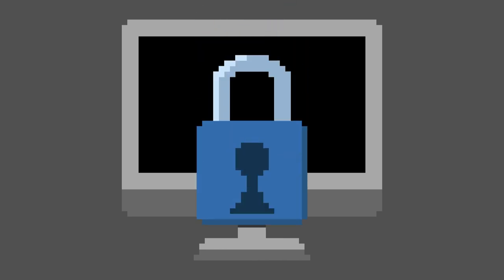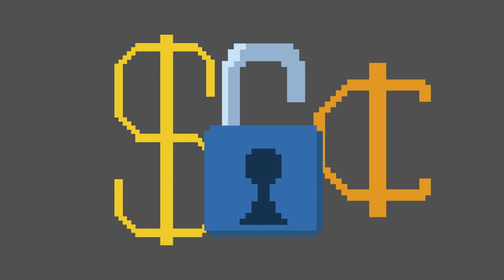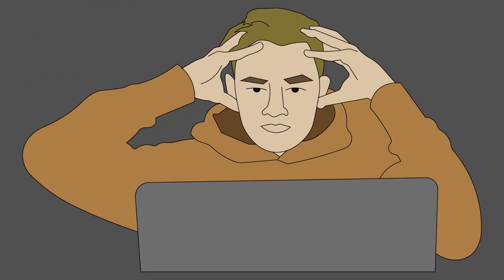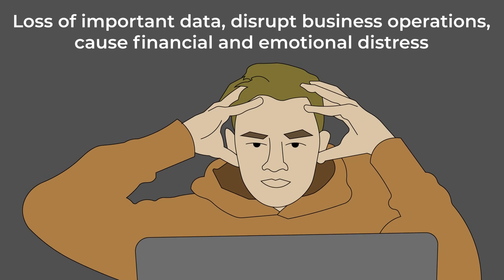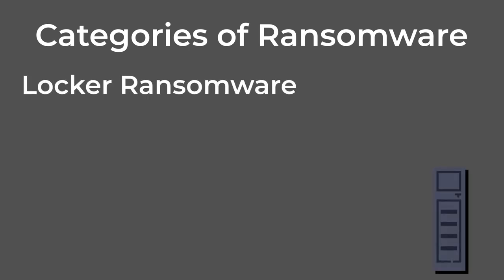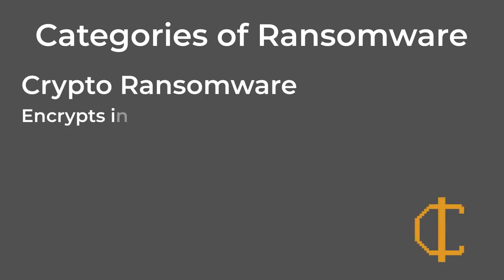Ransomware is malware that encrypts a victim's files or locks them out of their own computer system, rendering them inaccessible until a ransom is paid. Often the ransom will be demanded in cryptocurrency in exchange for providing the decryption key to unlock the files or device. However, there's no guarantee that paying the ransom will lead to the safe recovery of data, and it can also encourage further criminal activity. Ransomware attacks can be devastating, as they can result in the loss of important data, disrupt business operations, and cause financial and emotional distress to the victims. There are two types of ransomware: locker ransomware, which essentially locks users out of basic device functionality, and crypto ransomware, which encrypts individual files.